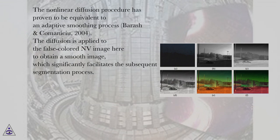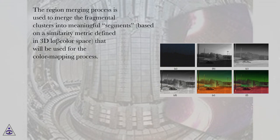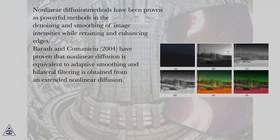The non-linear diffusion procedure has proven to be equivalent to an adaptive smoothing process (Burrash and Komenissu, 2004). The diffusion is applied to the false-colored NV image to obtain a smooth image, which significantly facilitates the subsequent segmentation process. The clustering process is performed separately on each color component in the L-alpha-beta color space to form a set of clusters. The region merging process is used to merge fragmental clusters into meaningful segments based on a similarity metric defined in 3D L-alpha-beta color space. Burrash and Komenissu (2004) have proven that non-linear diffusion is equivalent to adaptive smoothing, and bilateral filtering is obtained from an extended non-linear diffusion.